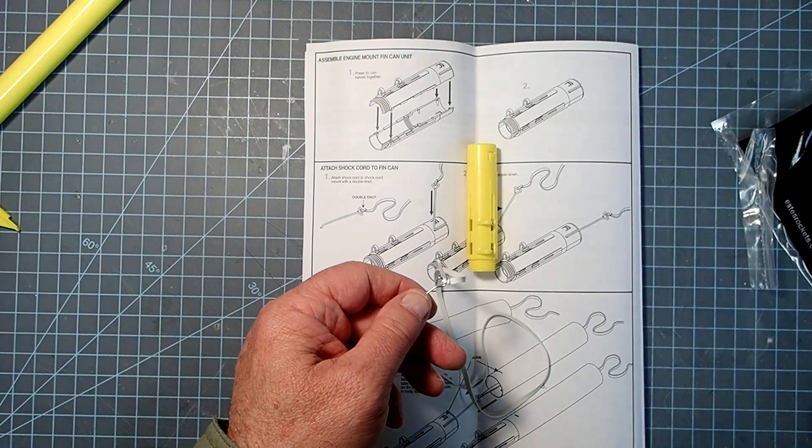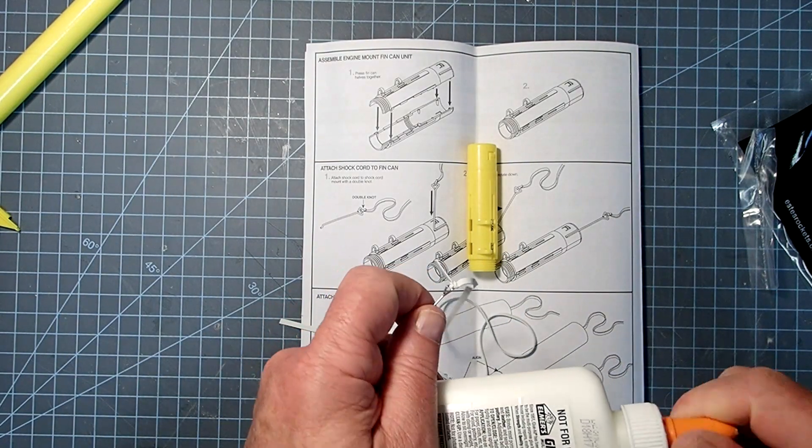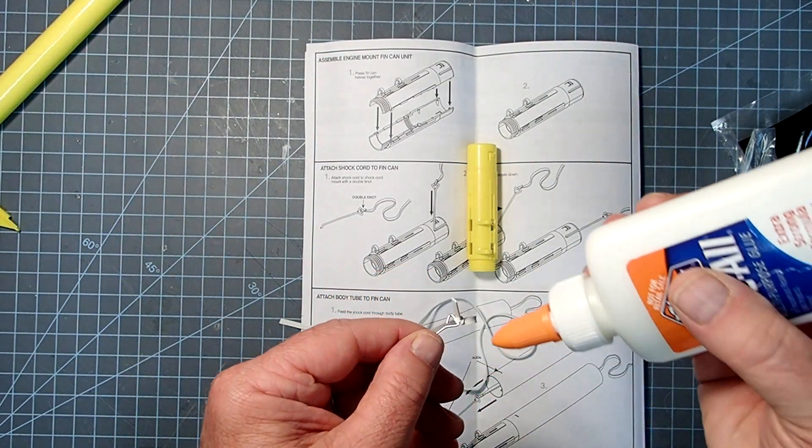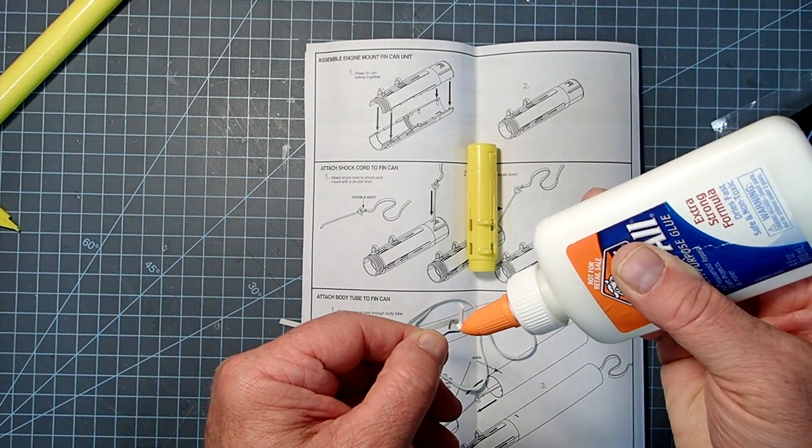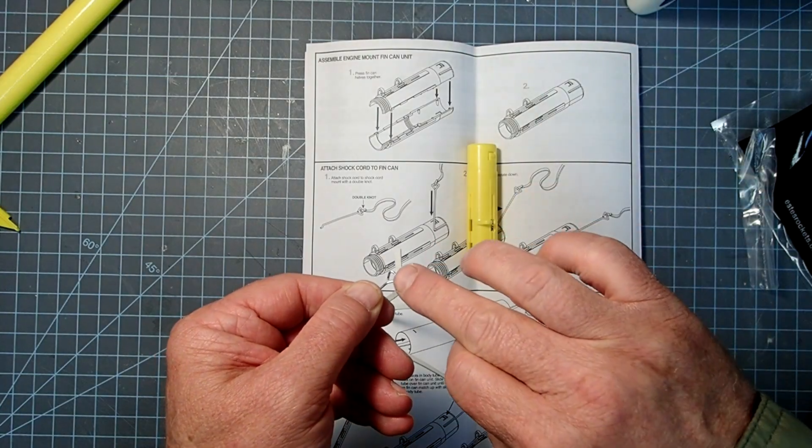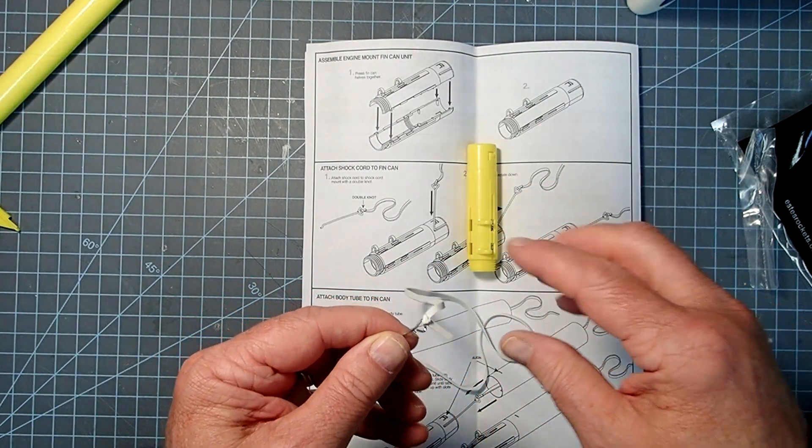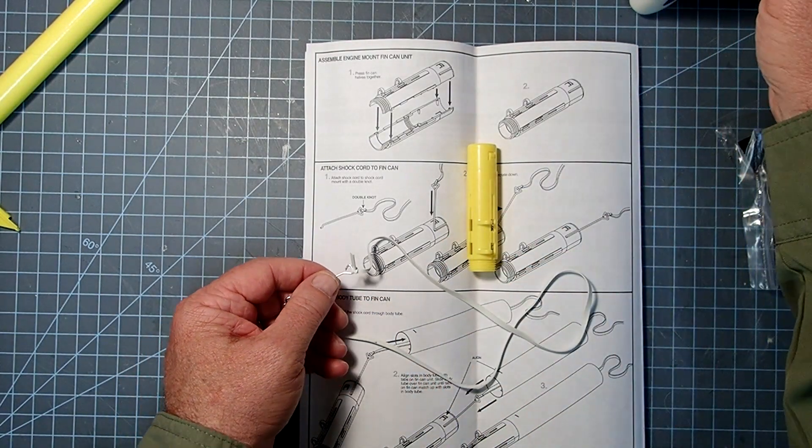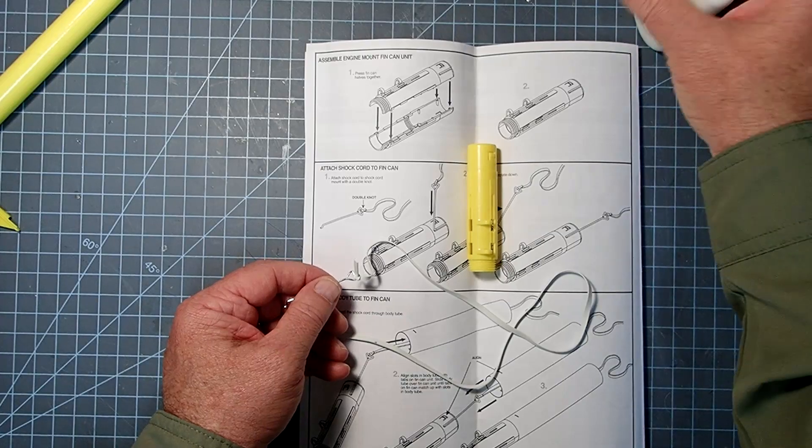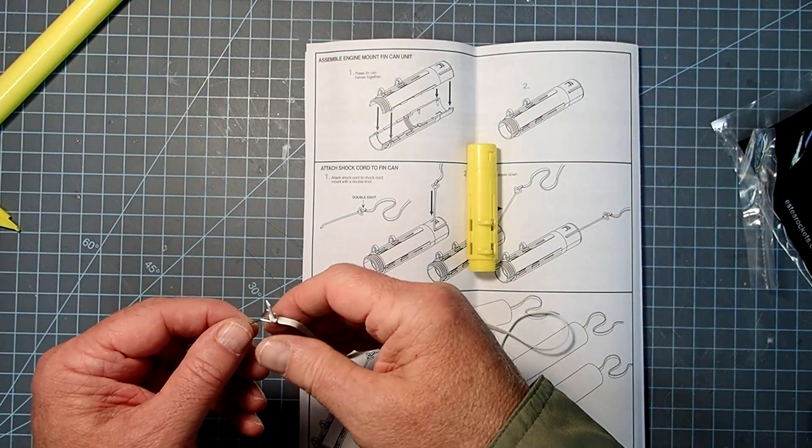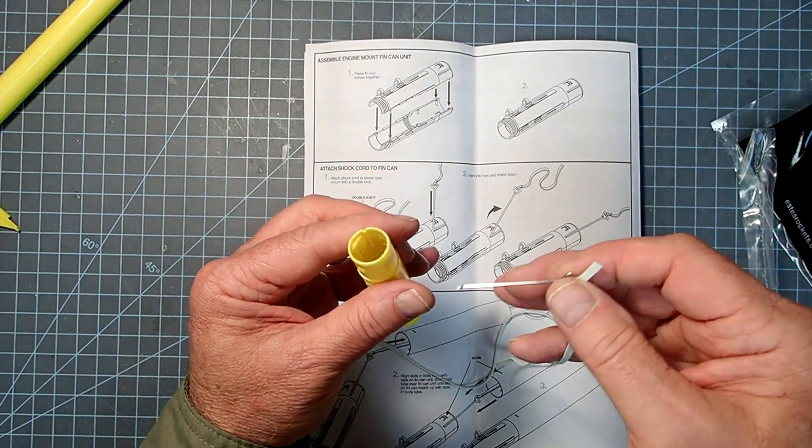And here you can even use a little bit of white glue or wood glue, and just put a little dot of glue on here and just work that into the knot a little bit. Don't use plastic cement or super glue, as that can damage the rubber.